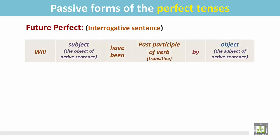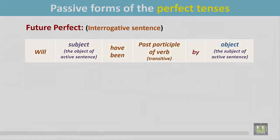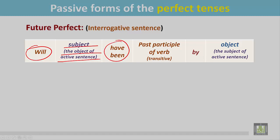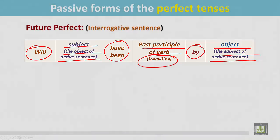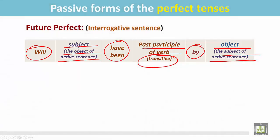See the structure. The sentence begins with the auxiliary verb 'will', then the subject — which is the object of the active sentence — then 'have been', and after that the verb is in the past participle form, followed by the preposition and finally the object, which is the subject of the active sentence.